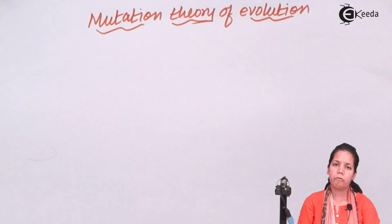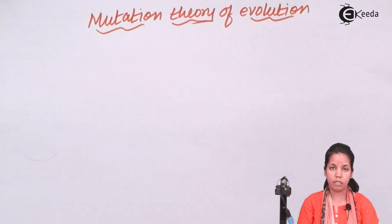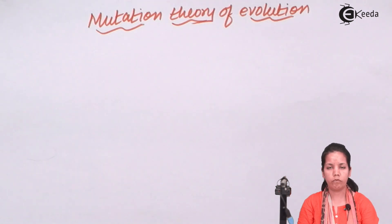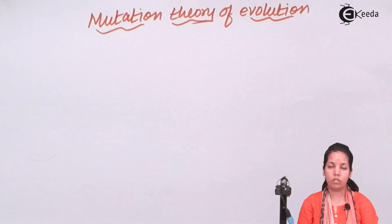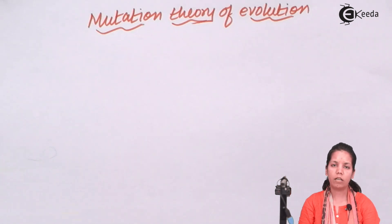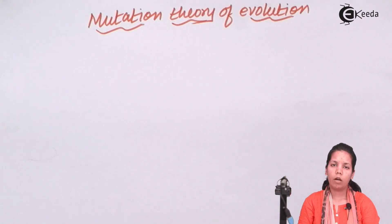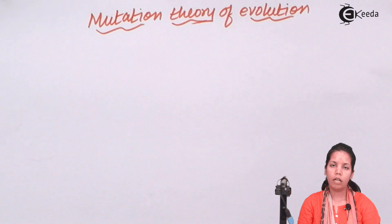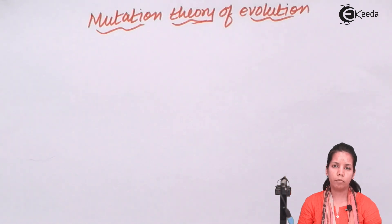Mutation Theory of Evolution was given by botanist Hugo de Vries and is also known as the organic theory of evolution, or the theory of gradual change. He proposed this theory by studying a plant species known as the evening primrose. He also stated that mutation was the law of nature, and that mutations could be of different kinds.